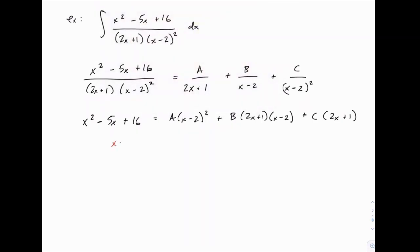Notice that x equals 2 is going to make our lives easy because several of these terms will drop off. The other one, what makes 2x plus 1 equals 0 is negative 1 half, and then we just need a third value, we'll use x equals 1 to make life easy.